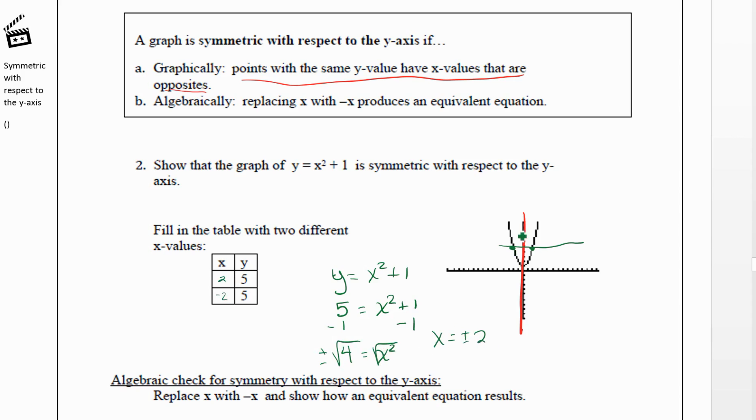So what that's saying is that if we go over to two and negative two, this is at two, five, and this is at negative two, five. So when you have the negative x value, you have the same y value.